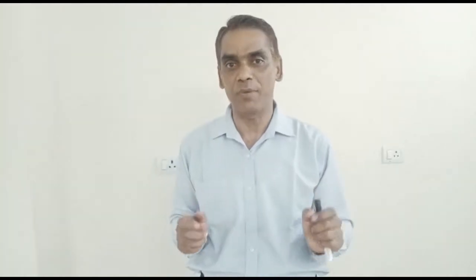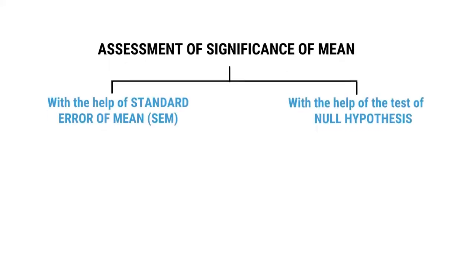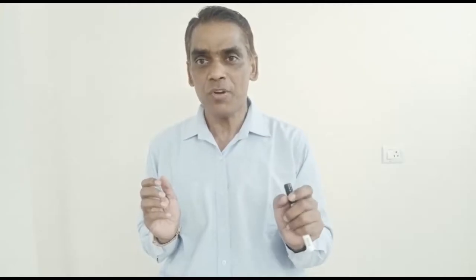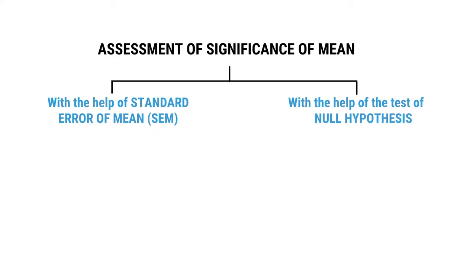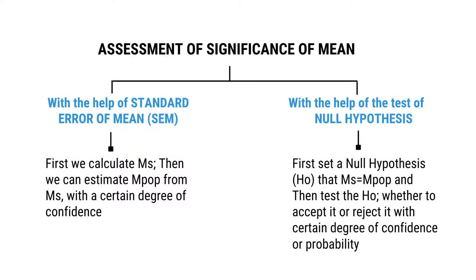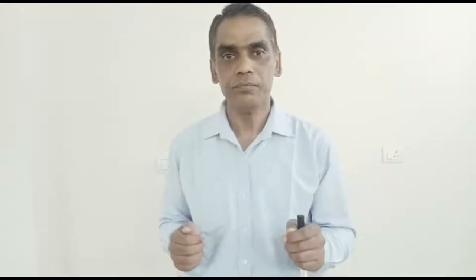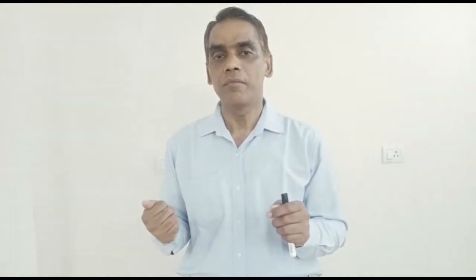Now, coming to the technical aspect — assessment of significance of mean. Significance of mean can be assessed by two different ways. One is assessment of significance of mean with the help of standard error of mean, Sigma M. The second aspect is with the help of the test of null hypothesis, which we will deal with in a subsequent week. In this week, we shall deal with how to assess the significance of mean with the help of standard error of mean. First, calculate the sample mean Ms, then from the sample mean, estimate the population mean with a certain degree of confidence.